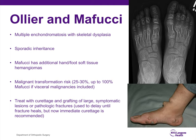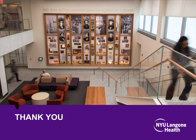Ollier disease and Mafucci syndrome are syndromes with multiple enchondromatosis and skeletal dysplasia. Mafucci syndrome has the addition of hand and foot soft tissue hemangiomas. They have a higher rate of malignant transformation, and Mafucci syndrome can develop visceral malignancies. In large and symptomatic lesions or in pathologic fractures, curettage and bone grafting with fixation is sufficient. Whereas previously it was thought to wait until the fracture heals, it is now more frequently advocated to perform early curettage and fixation.